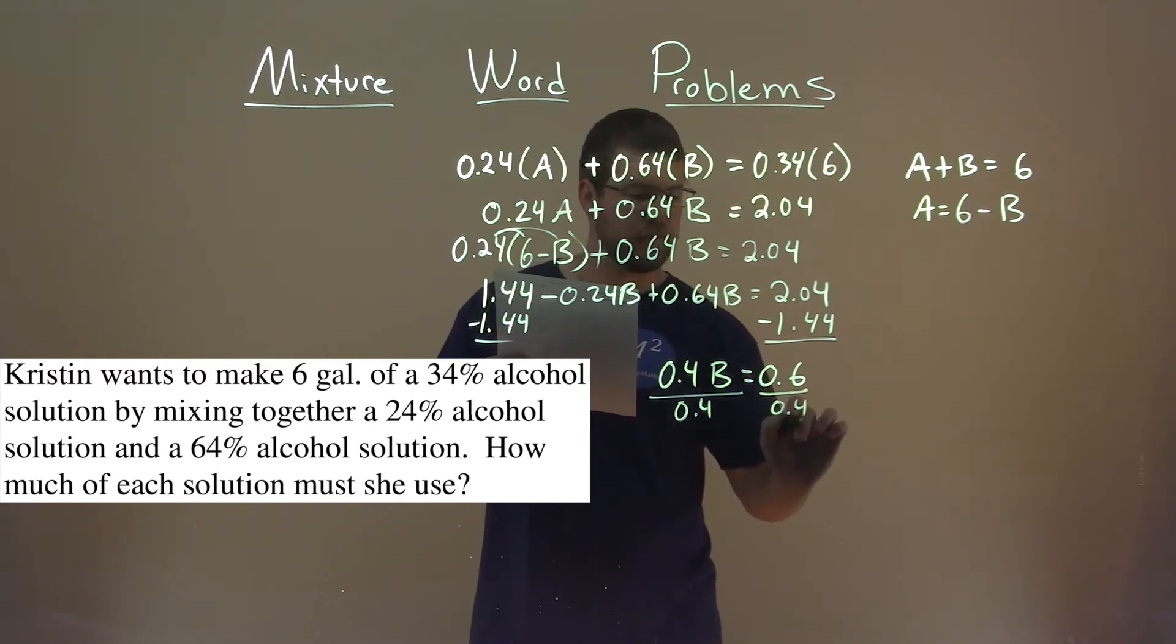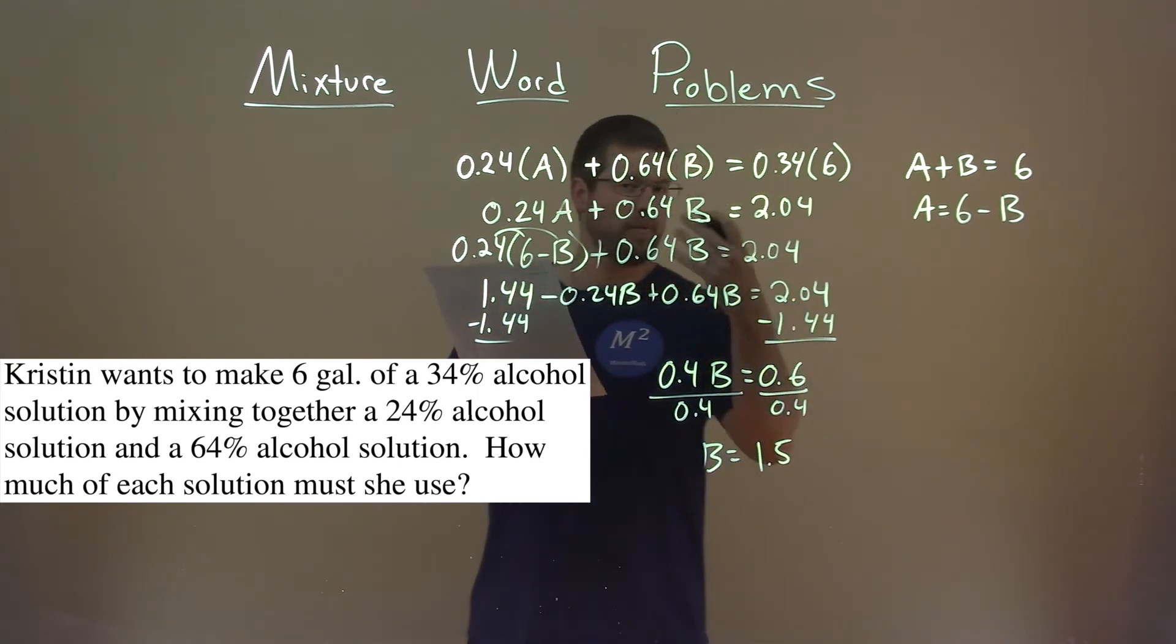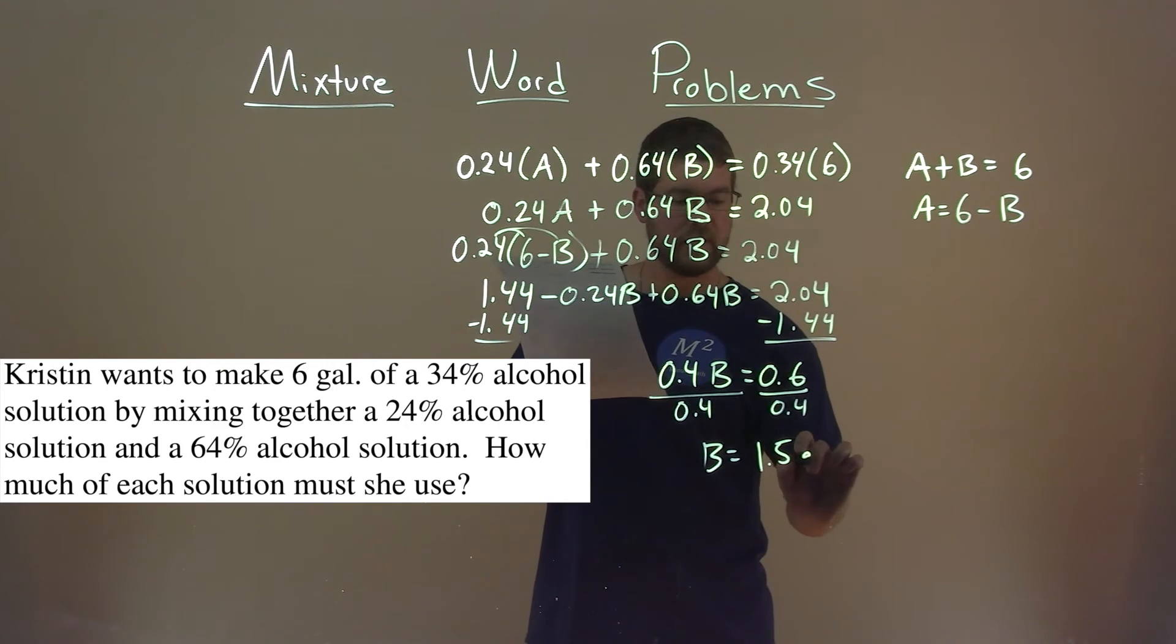And we have B by itself, which is 0.6 divided by 0.4, which comes out to be 1.5. And that's, what is that in context of this problem? The second solution, 1.5 gallons of a 64% solution.